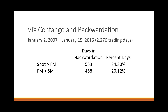The front month has been higher than the second month 458 of those trading days, which is about one in five trading days. Maybe it's because we did not have a lot of backwardation in 2012, 2013, 2014 — I have a short memory like everybody else. I found that 20% number a little surprising. And I even found this 13% number surprising — where we've got spot higher than the first month, higher than the second month — we've only had that happen 13% of trading days. But that generally occurs when we're in a very high volatility environment. As of early 2016, we're coming off about three years of low volatility where we had very little backwardation.